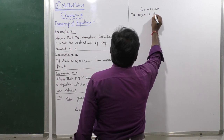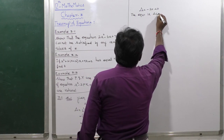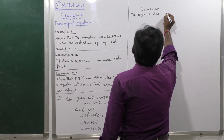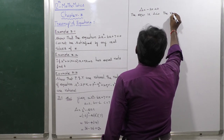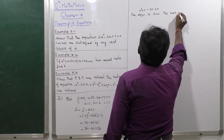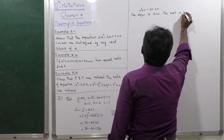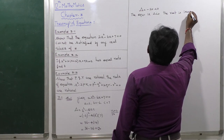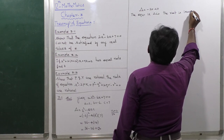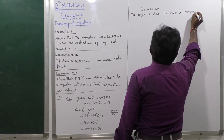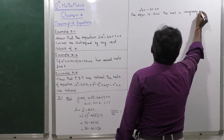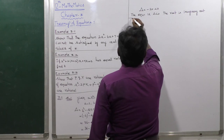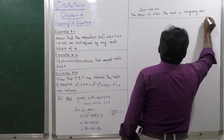Since delta is less than 0, the given equation has imaginary roots. Therefore the equation 2x squared minus 6x plus 7 has no real roots — the roots are imaginary. That concludes the first example.